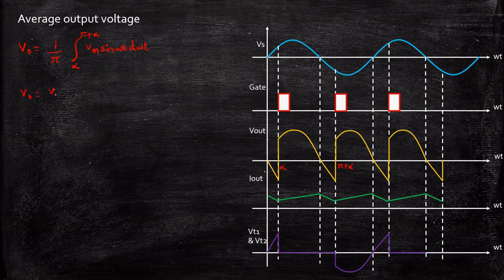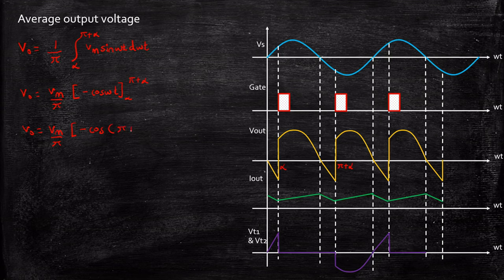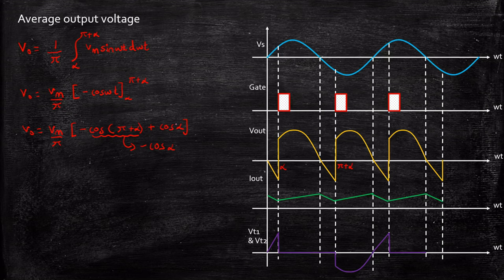Taking Vm outside and integrating, we get Vout = (Vm/π) × [−cos(ωt)] from alpha to pi plus alpha. Applying the limits: Vout = (Vm/π) × [−cos(π + α) + cos(α)]. From trigonometric identities, cos(π + α) = −cos(α), so −cos(π + α) = cos(α). Adding cos(α) + cos(α) gives 2cos(α). Therefore, the average output voltage is Vout = (2Vm/π) cos(α).